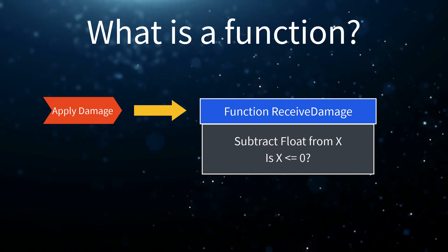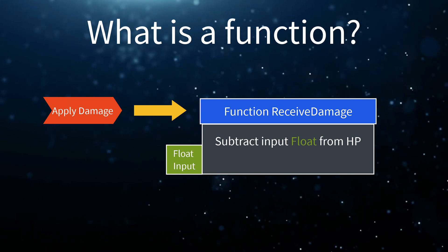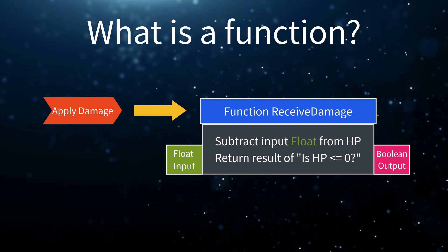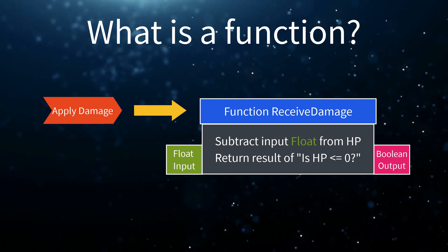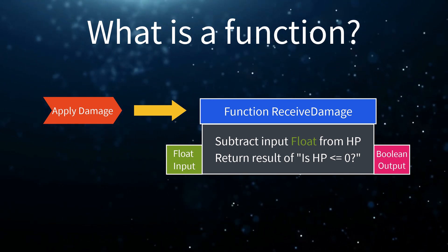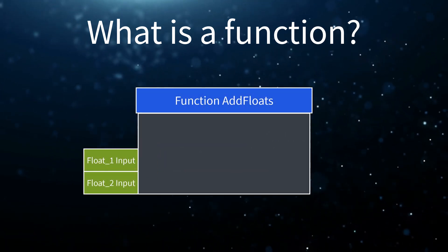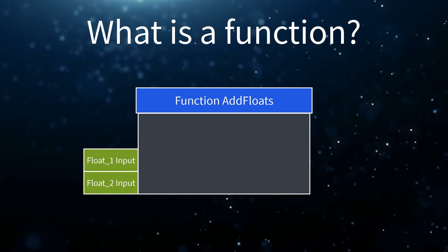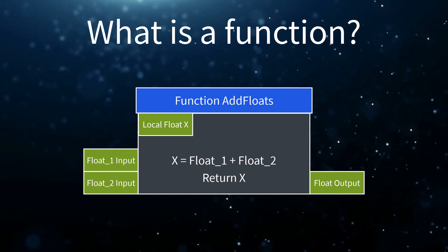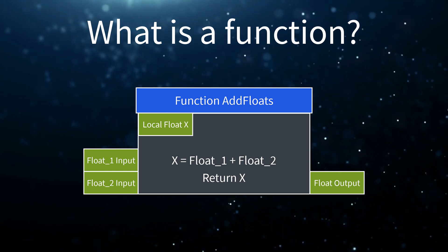Functions can also take input information, also known as input parameters, and they can also return information, also known as output parameters. This allows us to make our code inside our functions generic, since we can take specific parameters as input and return a result based on those parameters. Because the code inside a function is isolated, we can also create local variables — variables that only exist within the function. These variables are created when the function is called and are destroyed when the execution ends.